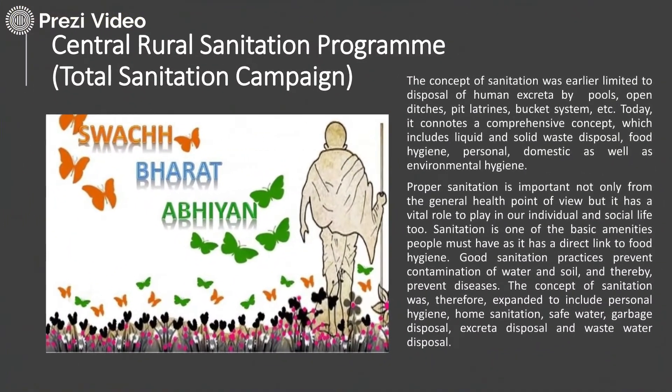Talking further about the total sanitation concept, objectives were set to prevent the disposal of human excreta by poles, open ditches, and bucket systems. It connects a comprehensive concept including proper ways of disposing liquid and solid waste, food hygiene, personal hygiene, domestic hygiene, and environmental hygiene. Good sanitation practices prevent the contamination of water and soil and therefore prevent disease.